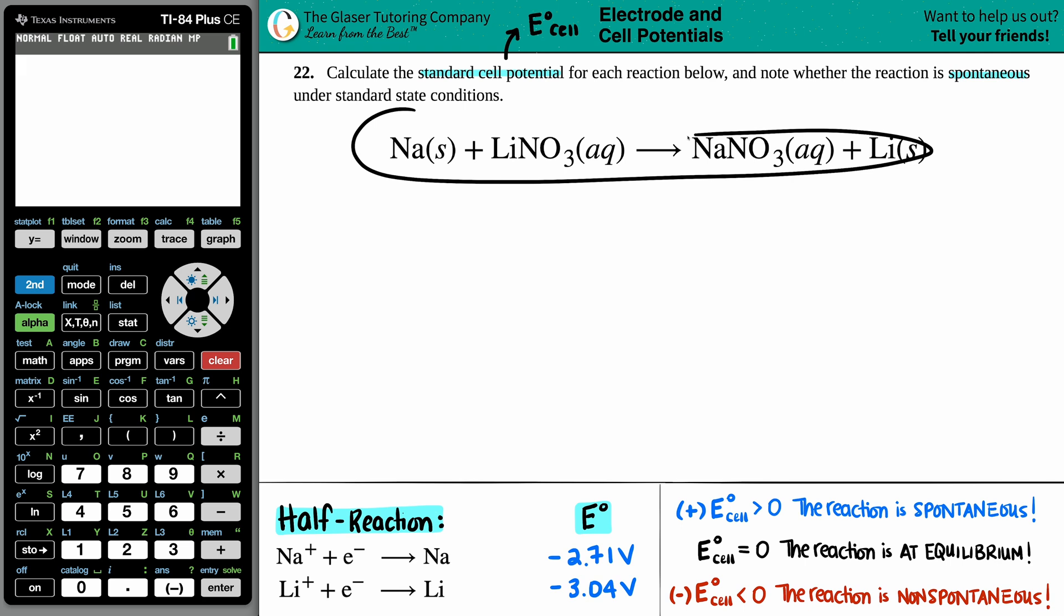Oxidation reduction reactions are always occurring because there's a change in oxidation state, a change in charges. But I'm looking at this here and I'm like, where are the charges? Show me the charges. There are none. So I have to go find them.